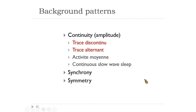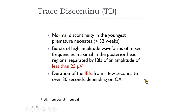Amplitude determines continuity. There are two discontinuous patterns — tracé discontinu and tracé alternant — and two continuous patterns — activité moyenne and continuous slow-wave sleep. For babies younger than 32 weeks, it is normal for the background to be discontinuous, called tracé discontinu (TD). It consists of bursts of high-amplitude waveforms of mixed frequencies separated by interburst intervals of amplitude less than 25 µV. Duration of the IBI is from a few seconds to over 30 seconds; the younger the baby, the longer the IBI.